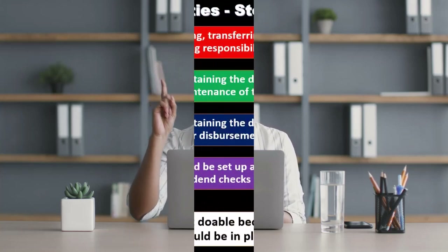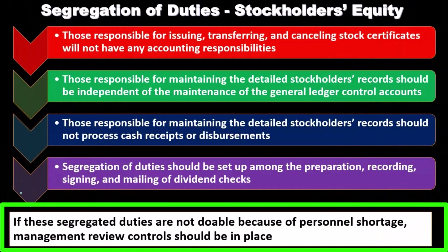If these segregation of duties are not doable because of personnel shortages — if there aren't enough personnel to perform these separations — then management review controls should be in place as an alternative control setup.